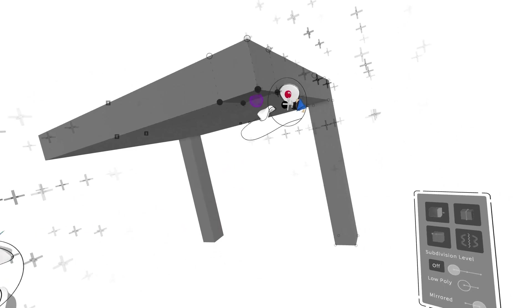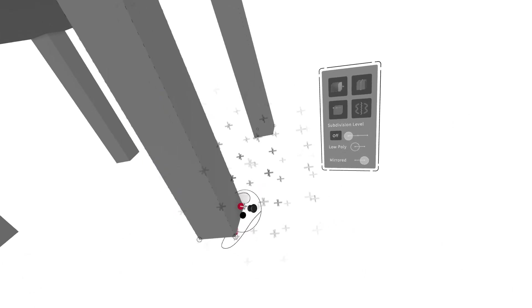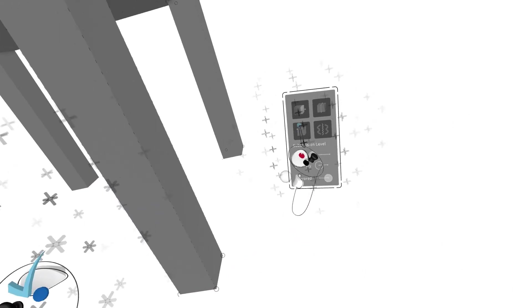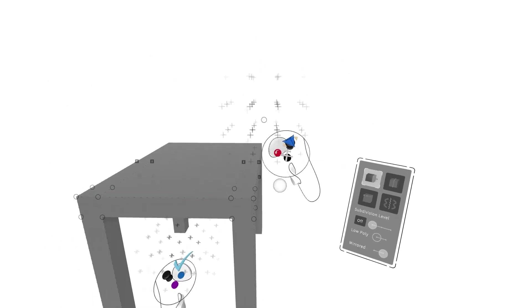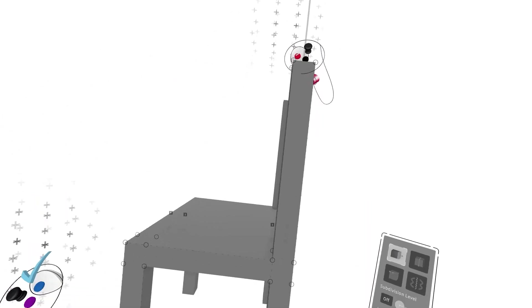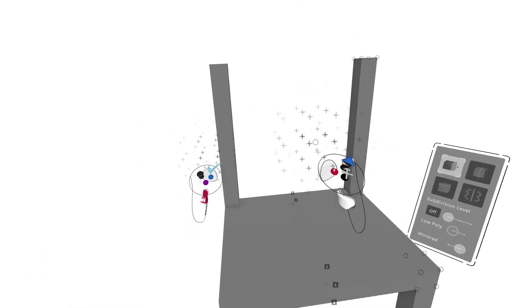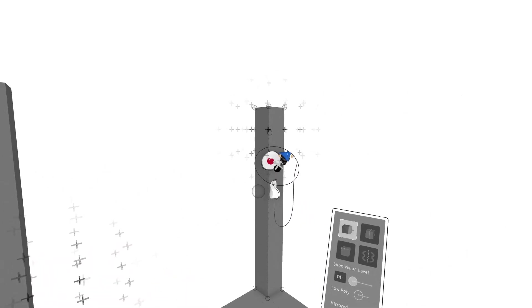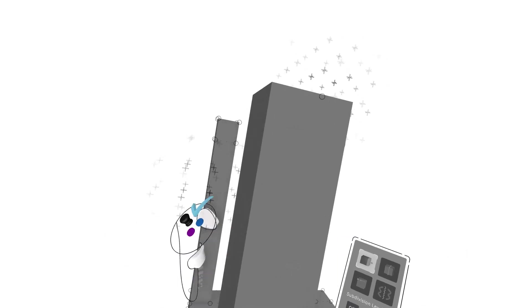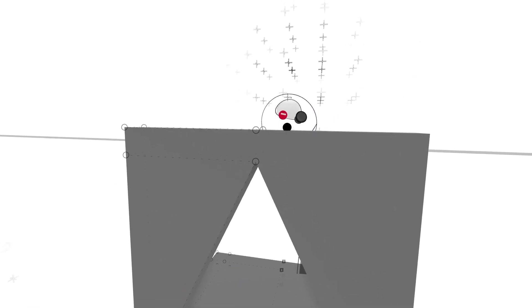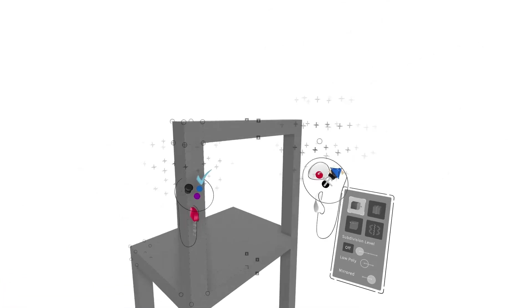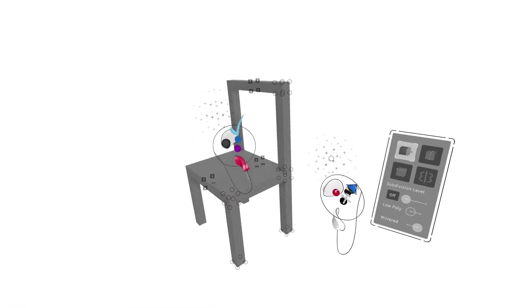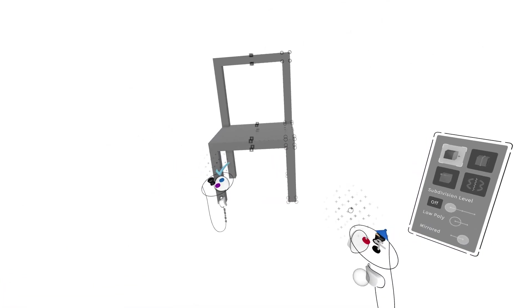We can do the same thing here. We could use the constrain movement here because we'll be doing the back as well. And then we'll also add in another section on this side — constrain, move that over. So that's kind of the basic layout for the chair.